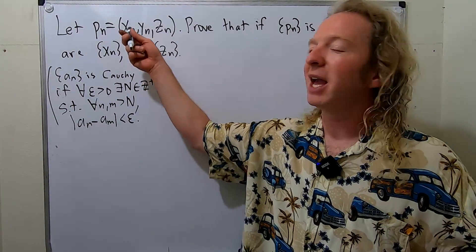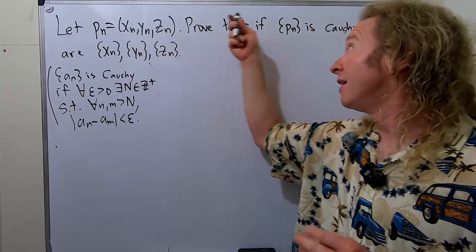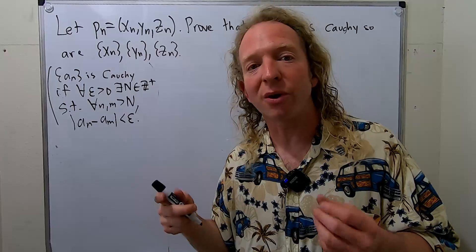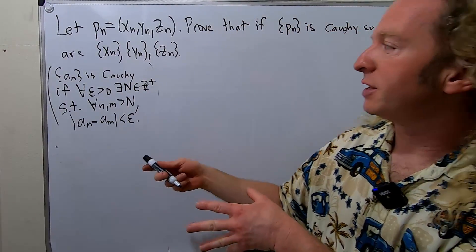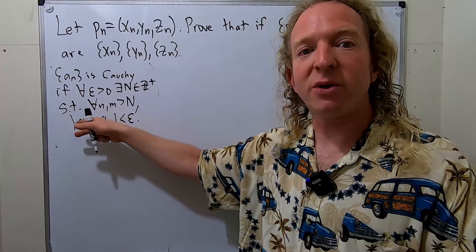In this video, we're going to prove that if we have a Cauchy sequence in space, that each of the component sequences are also Cauchy. So over here, I've written the definition of what it means for a sequence to be Cauchy.